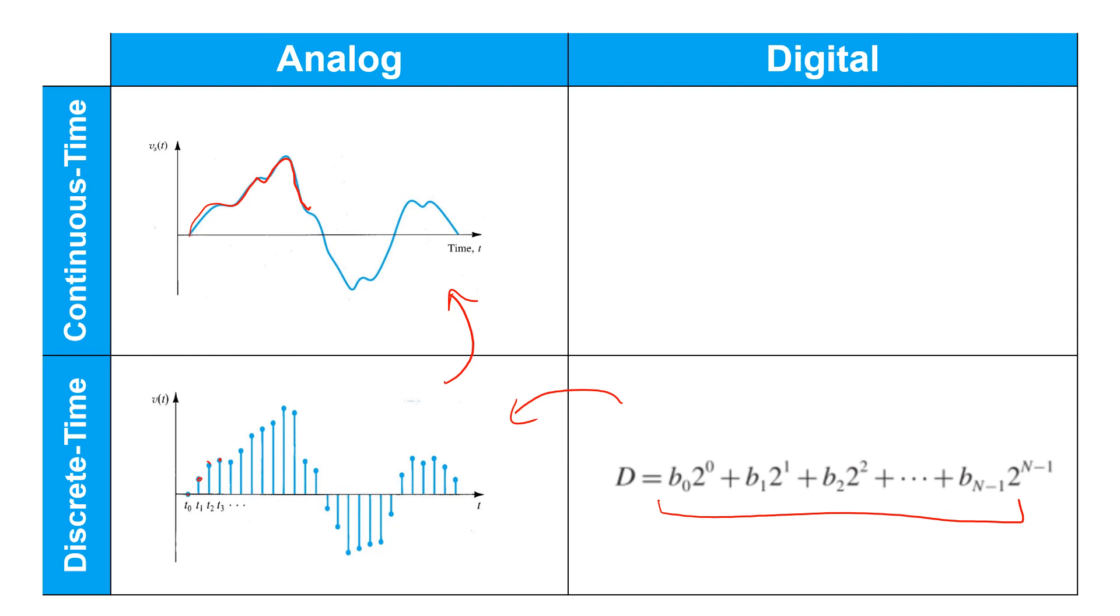Such circuits are called D to A converters. And they produce new analog output sample values at time intervals that are determined again by a clock.